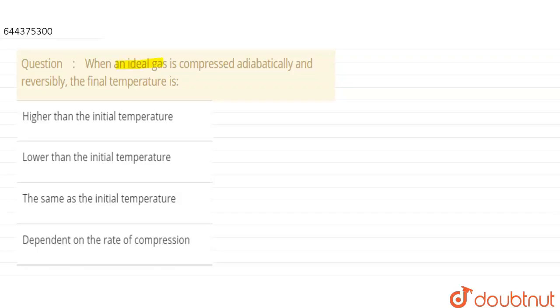Hello everyone, the question is: when an ideal gas is compressed adiabatically and reversibly, the final temperature is higher than the initial temperature, lower than the initial temperature, same as the initial temperature, or dependent on the rate of compression.